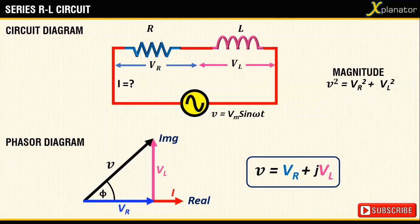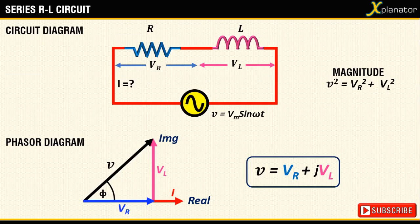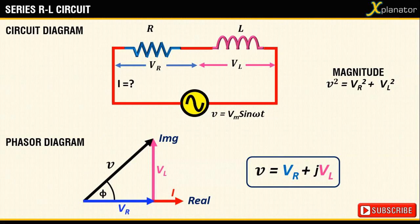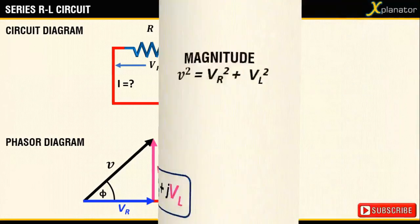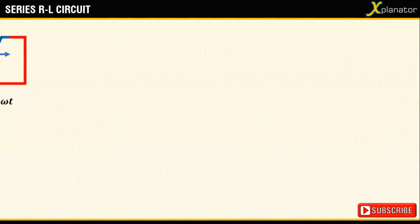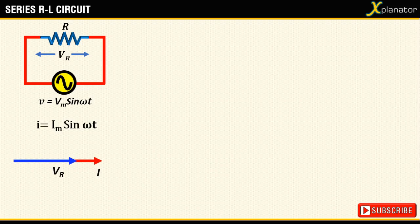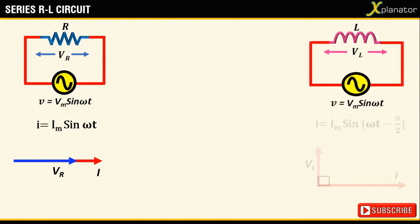Let's take a quick recap of how phasors and the equation for current in a pure resistive and a pure inductive circuit are written. You can see that in a pure resistor, voltage and current are in phase, while in a pure inductor, they are 90 degrees apart.